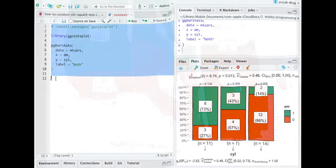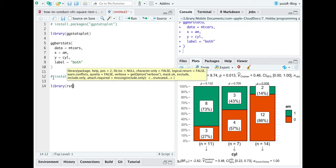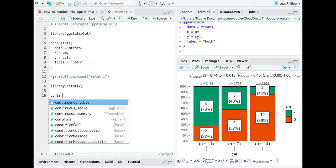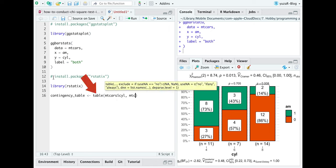The easiest way to make pairwise proportion tests is to use pairwise.prop.test function from rstatix package. Thus, first install and load rstatix package, then use table function for a contingency table of your variables.